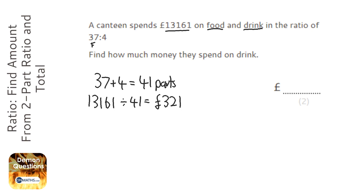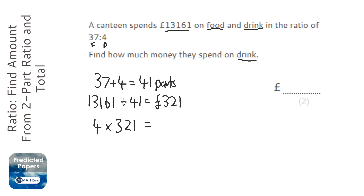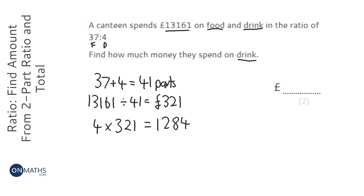The question says food and drink, so the 37 is for food and the 4 is for drink — the order they appear in the question matches the ratio. It's asking how much money is spent on drink. Drink only has 4 piles, so we do 4 times 321 and get the answer of 1284 pounds.